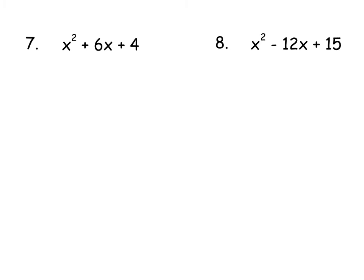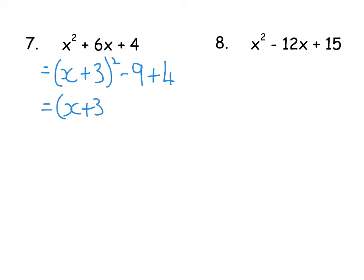You might want to pause the video and try the next two for yourself. For X² + 6X + 4: half of 6 is 3, so (X + 3)². 3² = 9, subtract 9, and add on the +4. That gives (X + 3)² - 5, since -9 + 4 = -5.